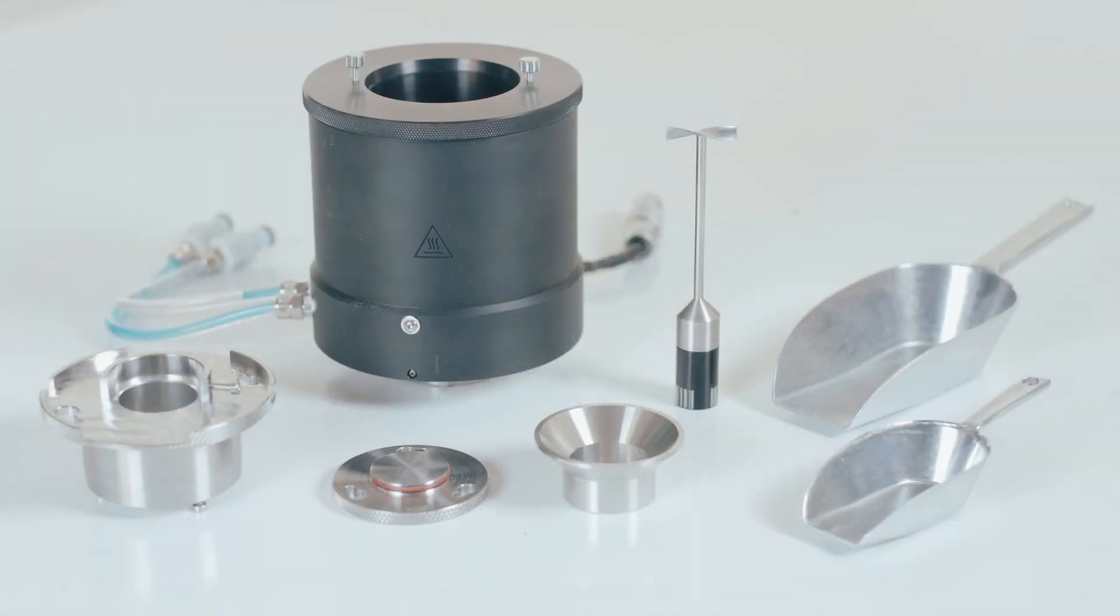The flow cell accessory with temperature control consists of the Peltier concentric cylinder jacket, cup with flow insert, impeller rotor, funnel, loading scoop, and trimming scoop.